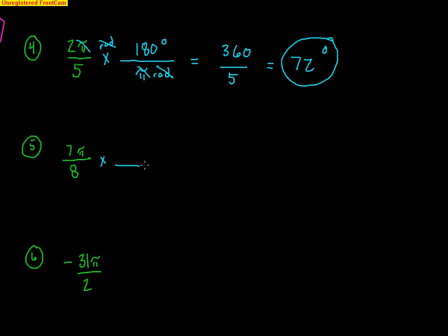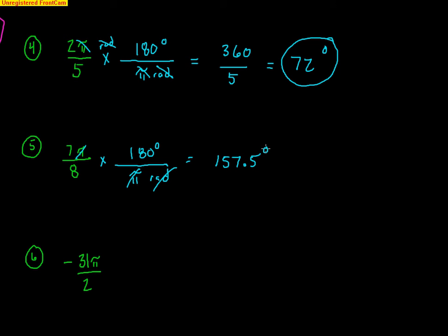For 7π over 8 — I can see it's radians because there's no degree symbol and there's a π. Put π radians on the bottom and 180 degrees on top. The π's cancel and so do the radians. I get 7 times 180 over 8. You can do 7 eighths in parentheses times 180, and you get 157.5 degrees.